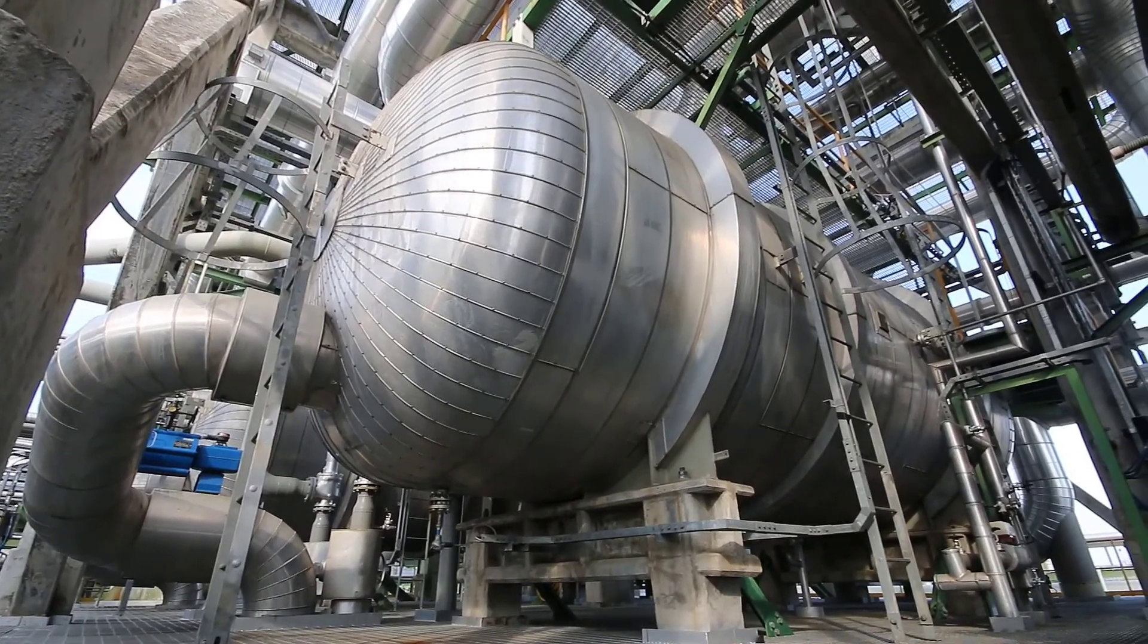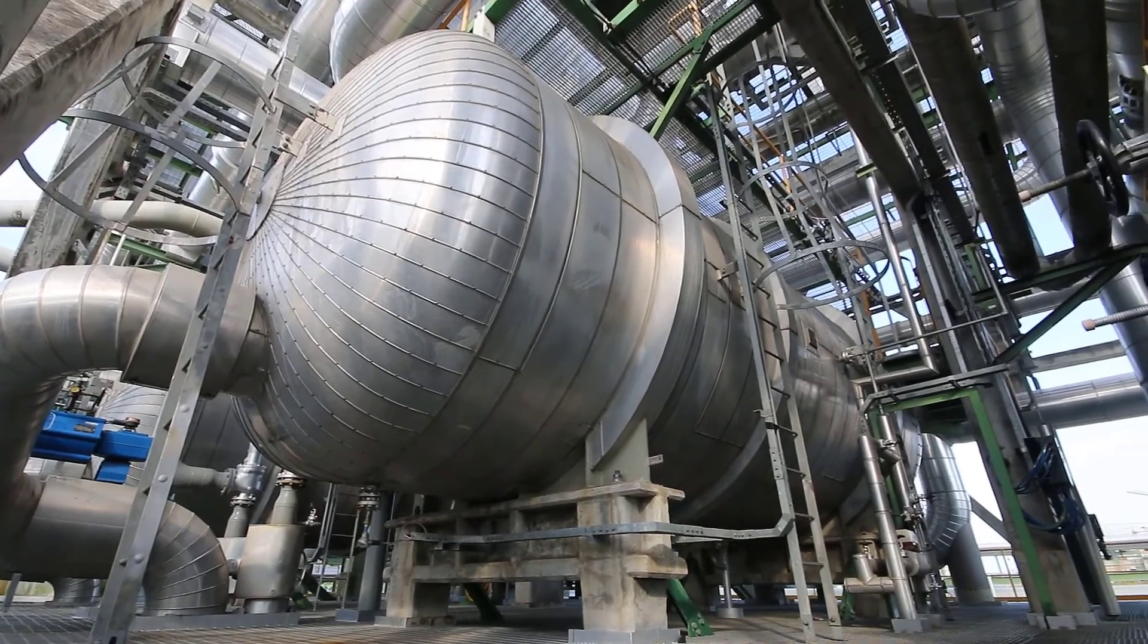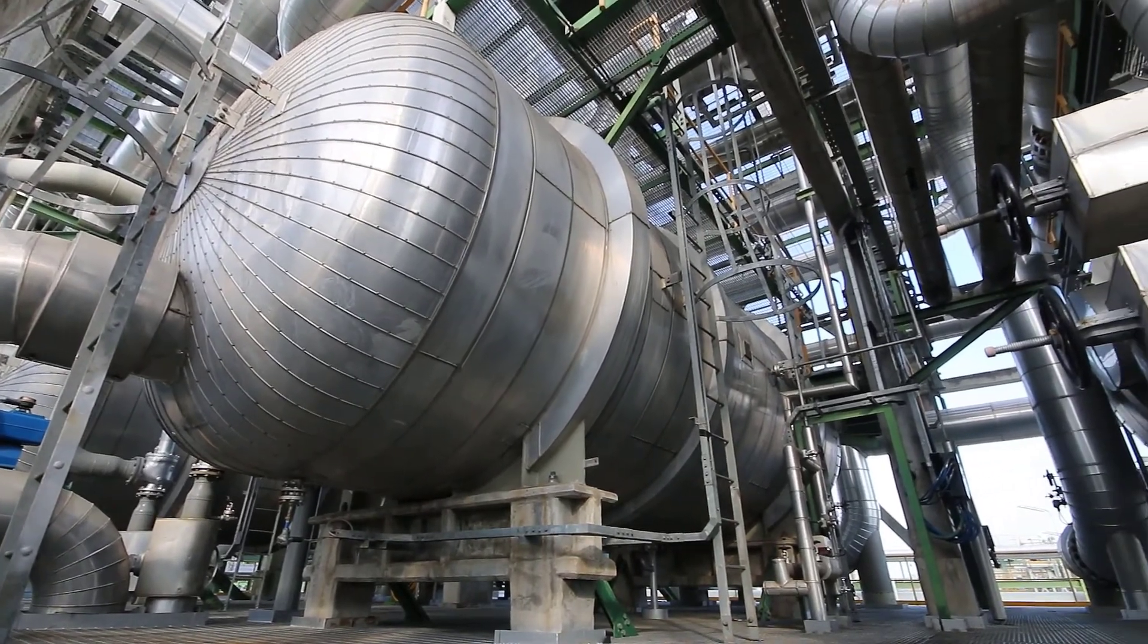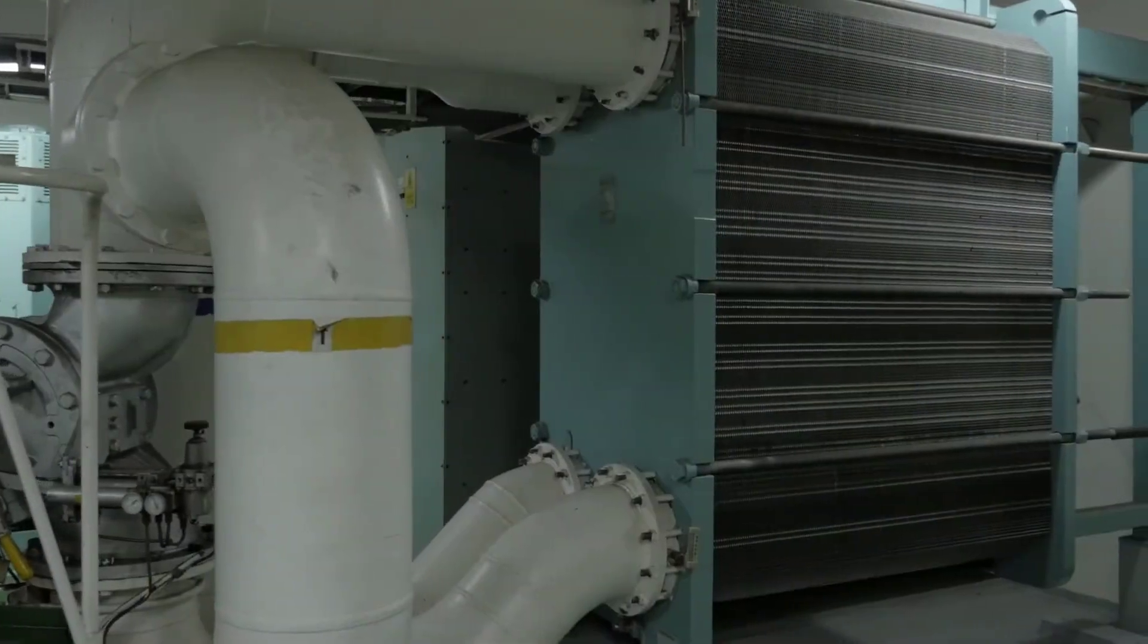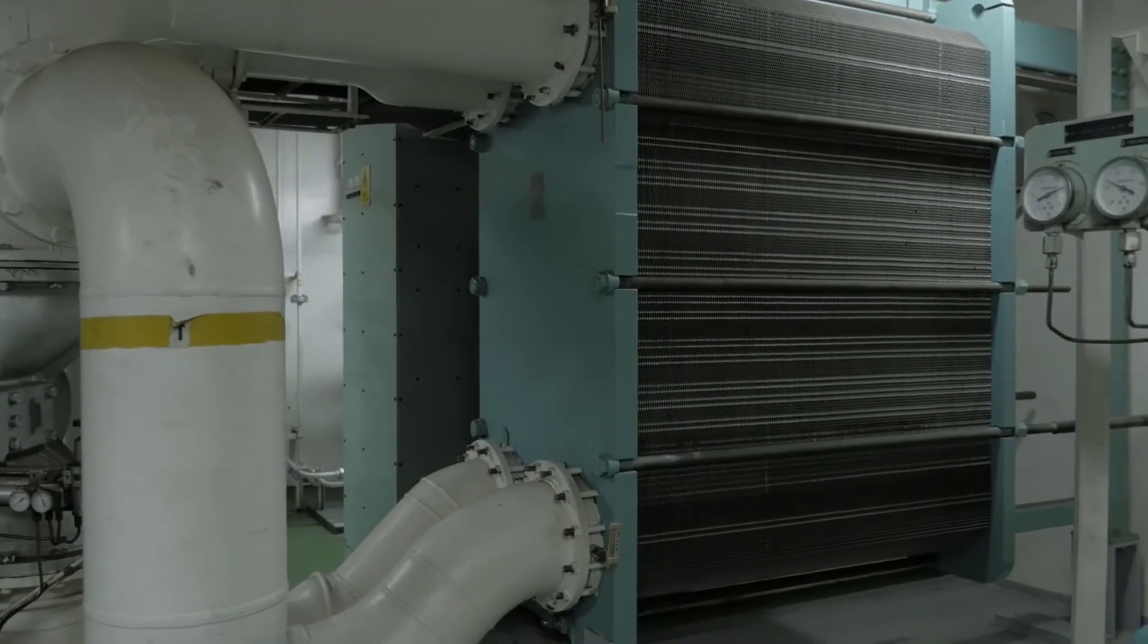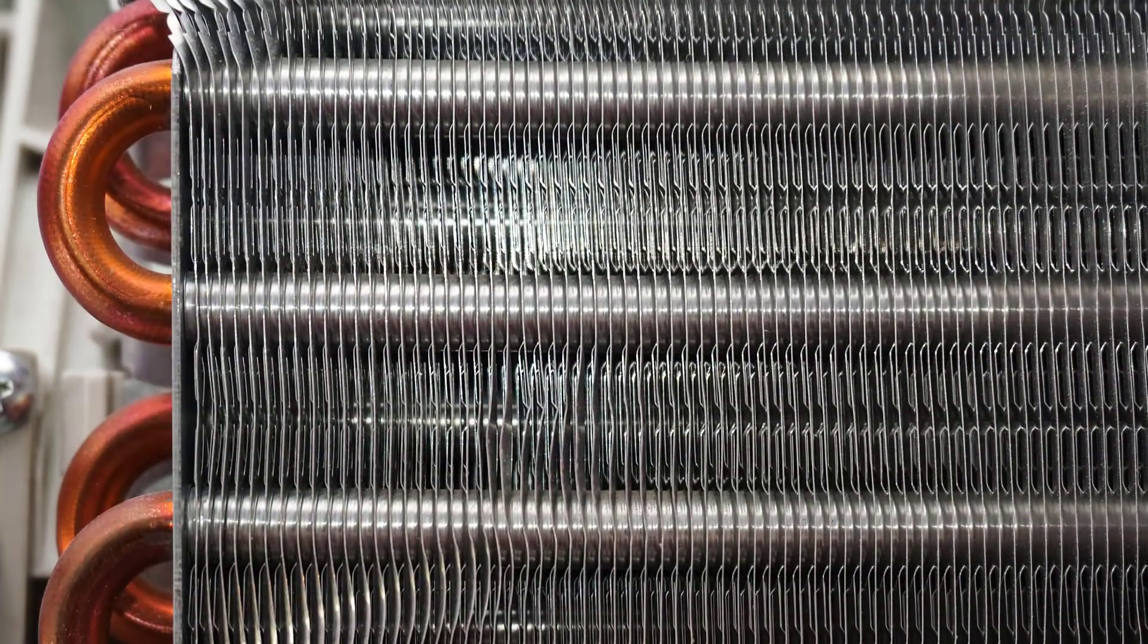Some common types of heat exchangers used in industrial applications are shell and tube heat exchangers, compact heat exchangers, plate heat exchangers, and finned tube heat exchangers.